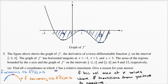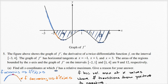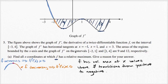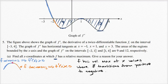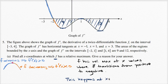We see f prime is positive over here, and then right when we hit x equals negative two, f prime becomes negative. So the function f must be increasing before that point because f prime is positive, and then f is decreasing because f prime is negative. So this happens at x equals two.